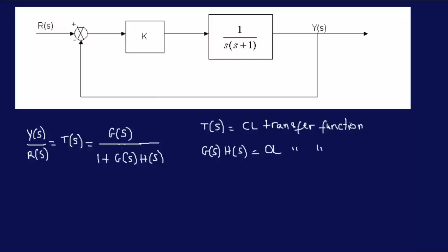So, in our example over here, if you were to apply this particular formula, Y of S over R of S is equal to G of S. This is the gain, K.